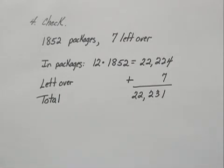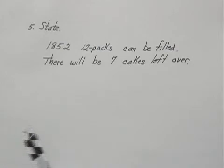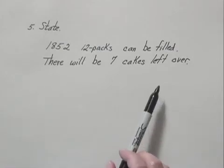So we can feel confident that our answer is correct and we can move to the fifth step which is to state the answer. We state that 1852 twelve-packs can be filled and there will be 7 cakes left over.